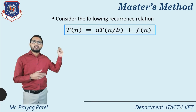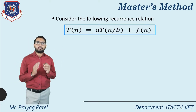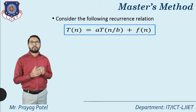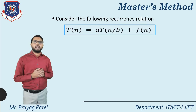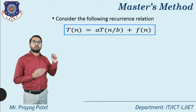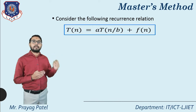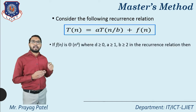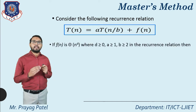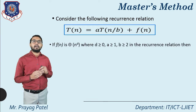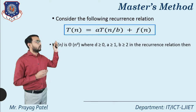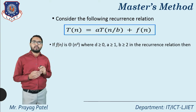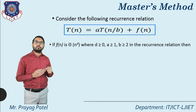Now consider the equations for the master's method. Consider the recurrence relation T(n) = aT(n/b) + f(n), where f(n) is Θ(n^d), with d ≥ 0.